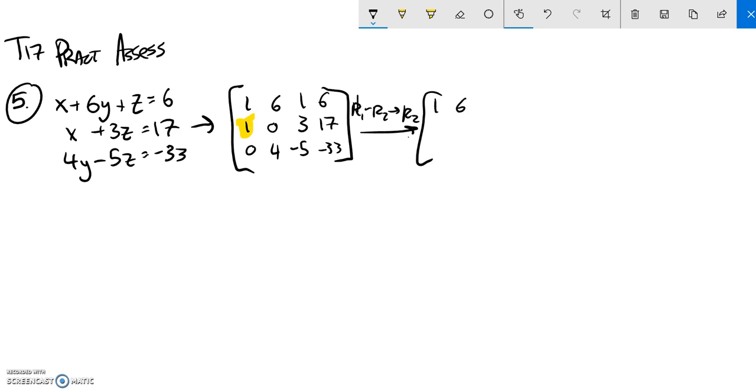And so the first row stays unchanged. 1 minus 1 is 0. 6 minus 0 is 6. Notice I lose that 0 that was there. Not a lot I can do about that. 1 minus 3 is negative 2. 6 minus 17 is negative 11. Feels good. Third row is just going to stay as it is. Negative 5, negative 33, 3. Good.